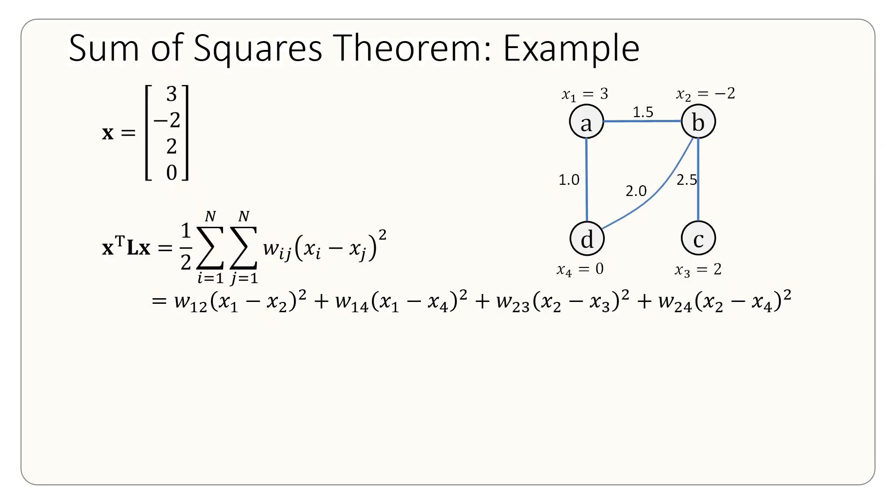An example will make it clear. We have a graph with four vertices or four nodes, and so we create this 4 by 1 vector x, which is the same as assigning a scalar value to each of these vertices. Think of A, B, C, D, these vertices as 1, 2, 3, 4.